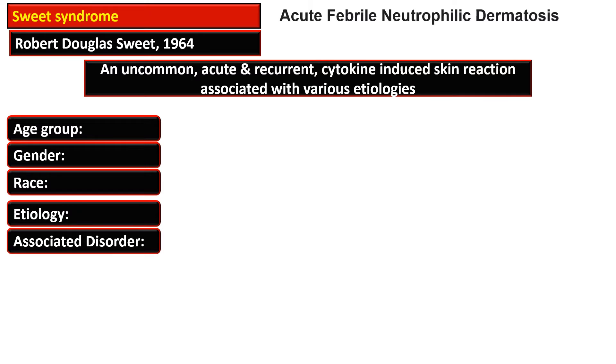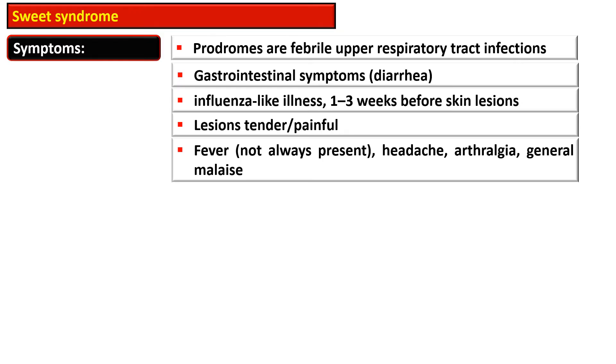The clinical manifestations of Sweet syndrome: the prodromes are febrile upper respiratory tract infections. The patient may present with GI symptoms such as diarrhea. There is usually an influenza-like illness one to three weeks before the skin lesion appears. The lesions are tender and painful. Fever is not always present, but there may be headache, arthralgia, and general malaise.